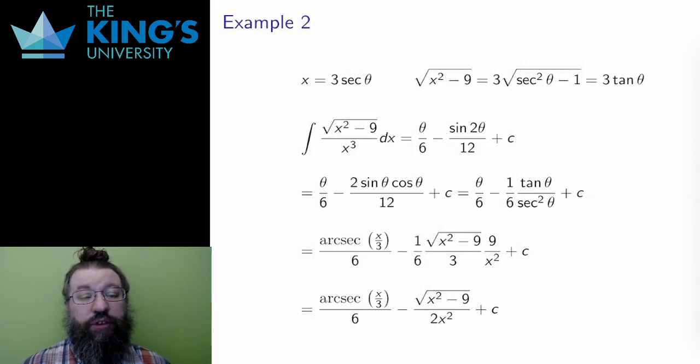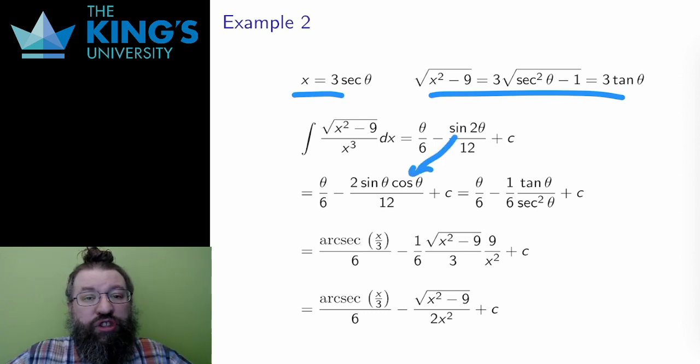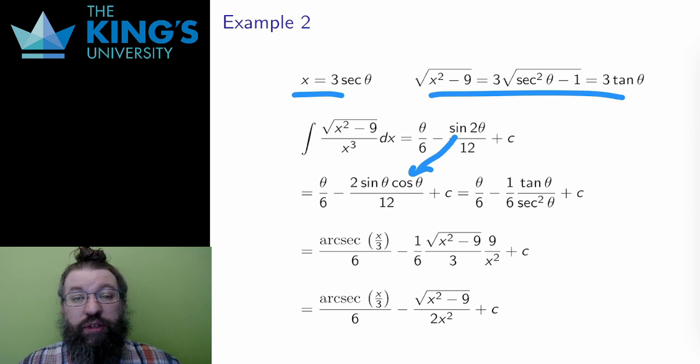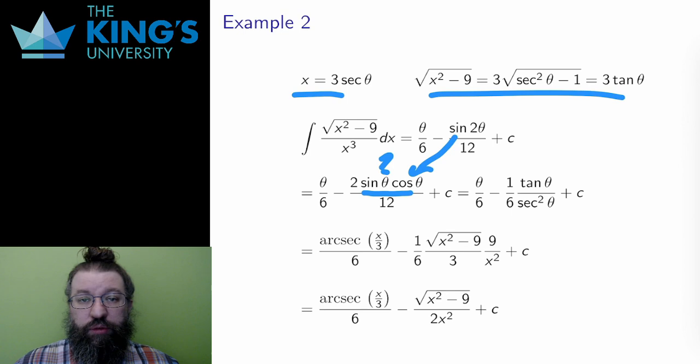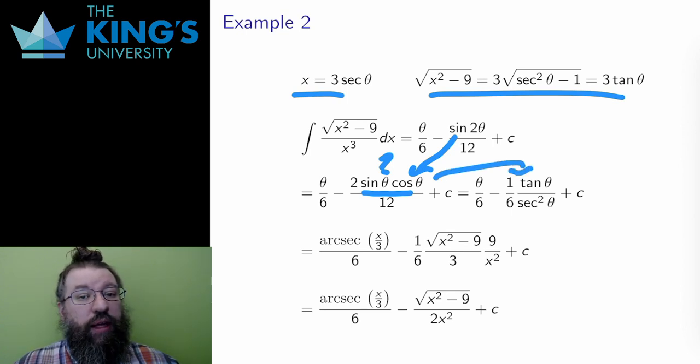Then I need to reverse the substitution. I first change the sine 2 theta into 2 sine theta cos theta, since there is no straight reverse for sine 2 theta. However, the substitution is secant and tangent, so I also need to change the sines and cosines into secants and tangents. Tangent is sine over cos, so the sine here can become tangent times cosine, and that leaves two cosines in the numerator, which is the same as two secants in the denominator.